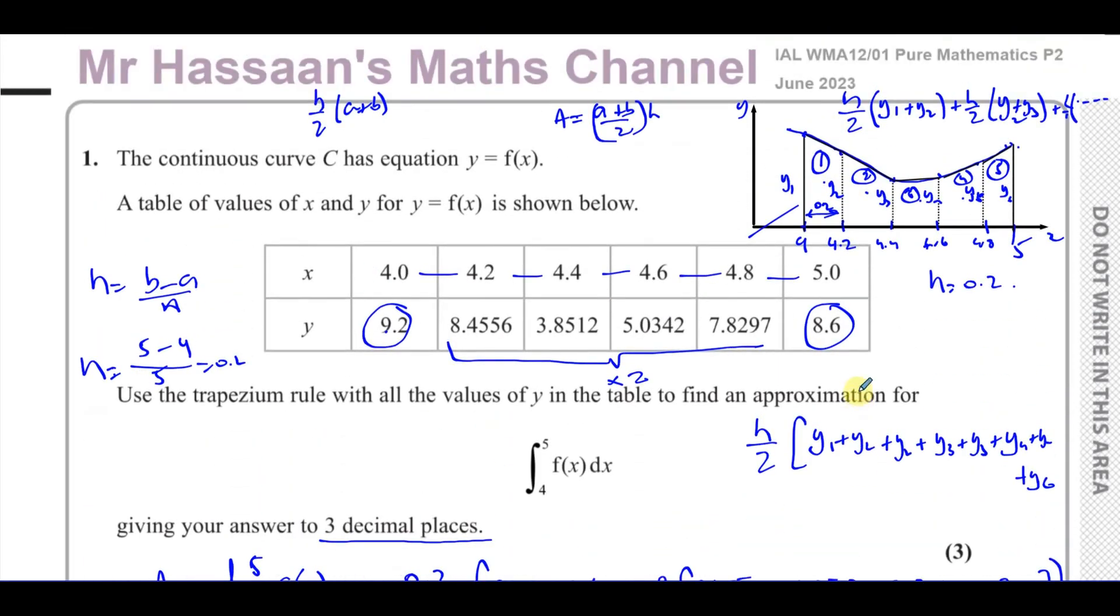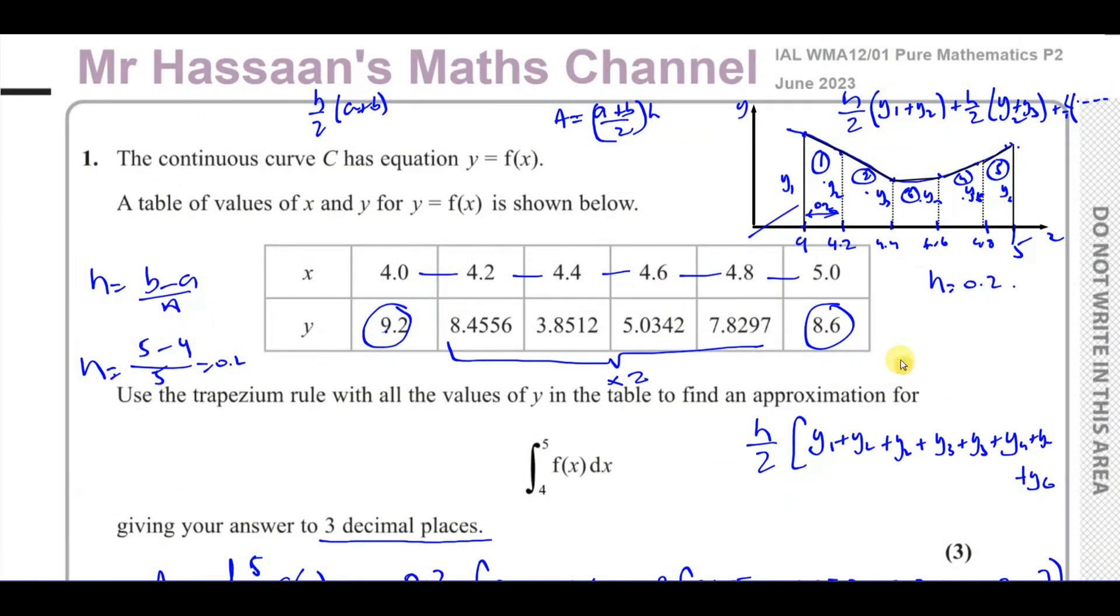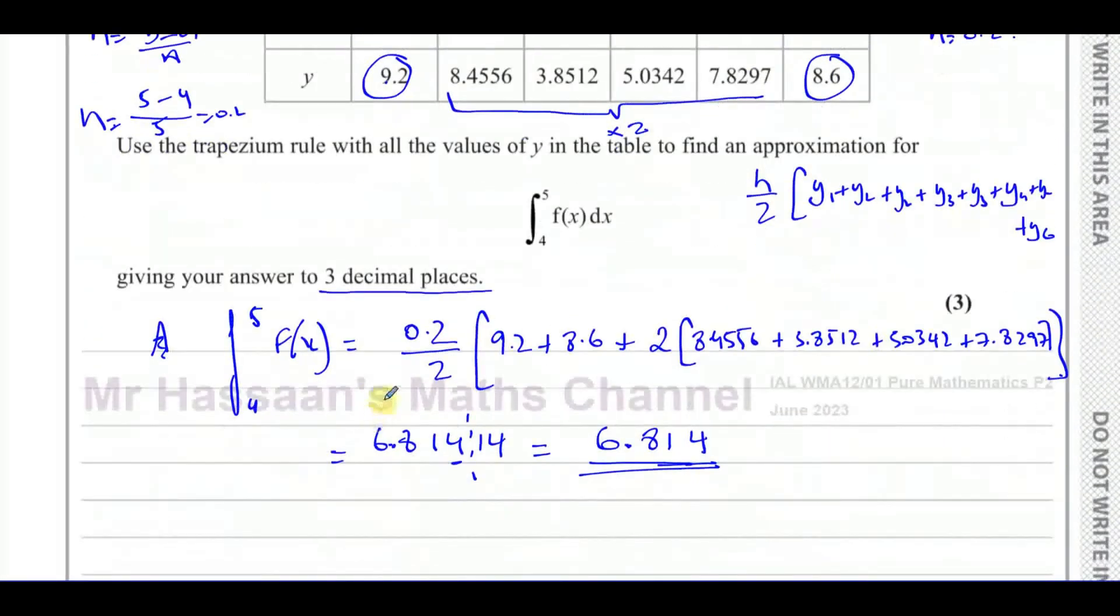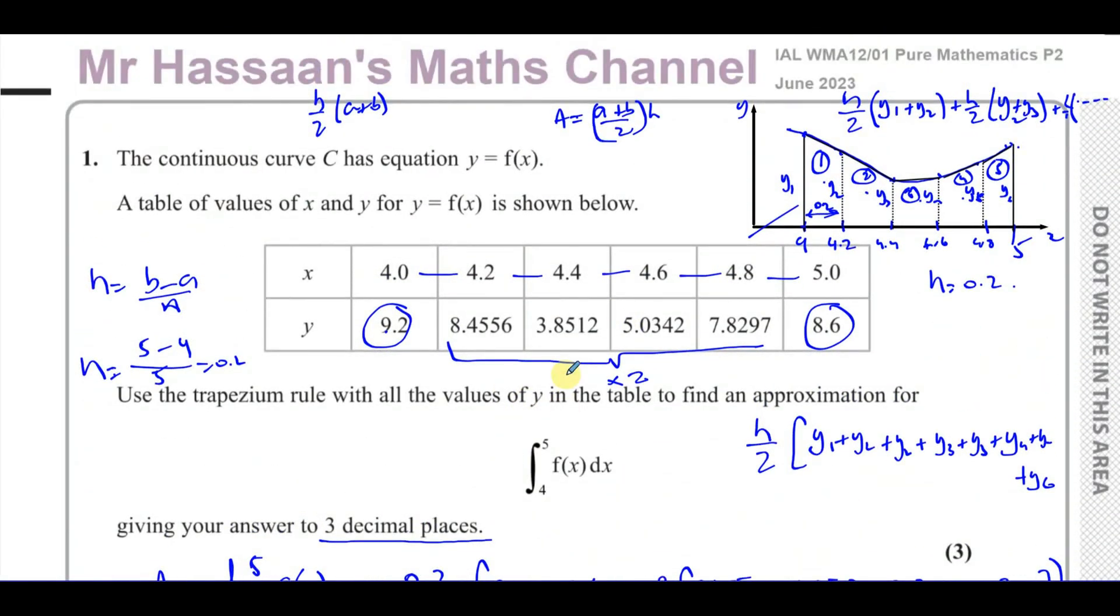Quite a simple question to start off this paper, and normally in this type of trapezium rule question, they would normally give you a part B, where you have to then use your answer to part A to do something else, which is related to part A, but in this case, it's just a very straightforward trapezium rule question.